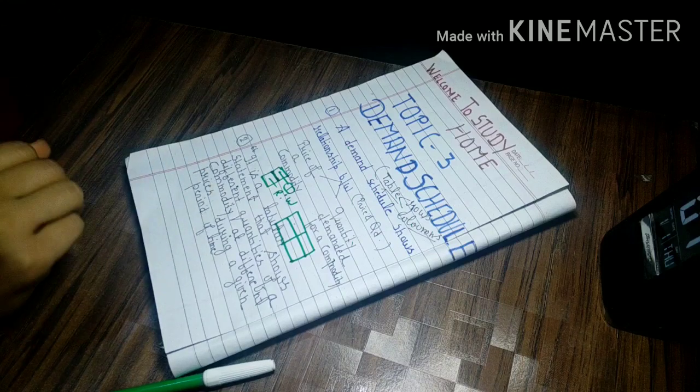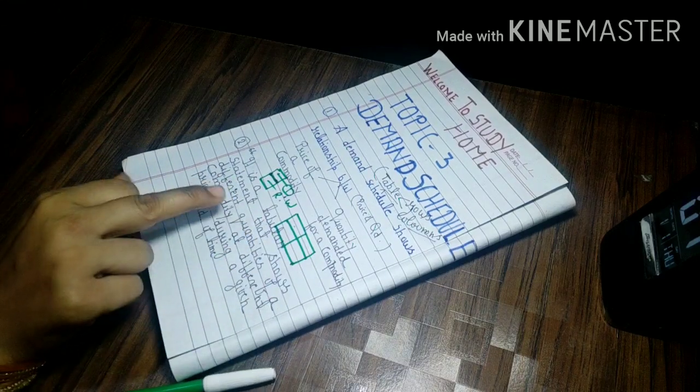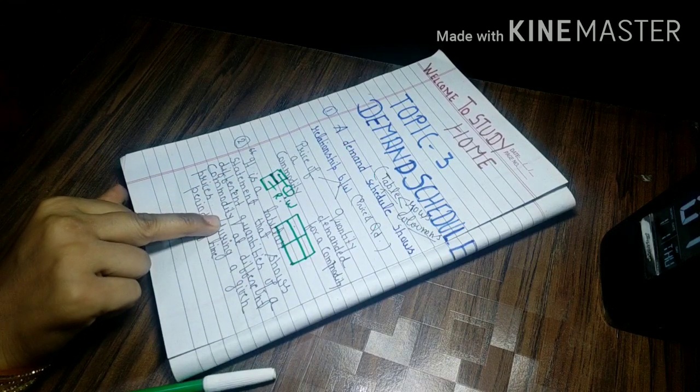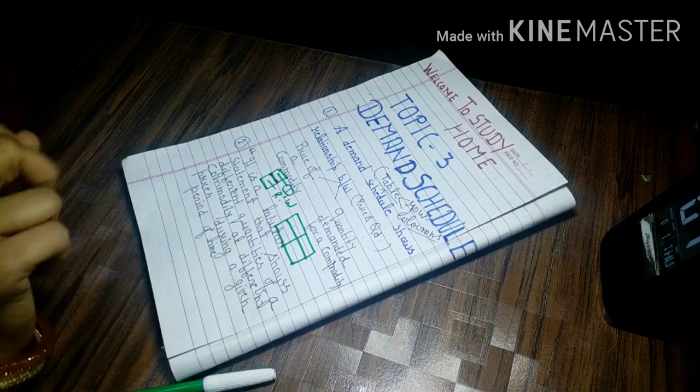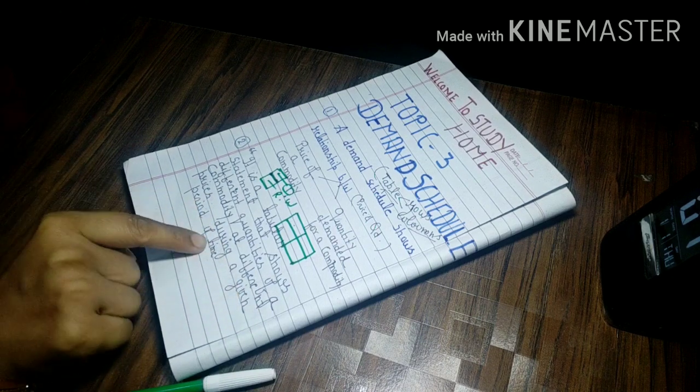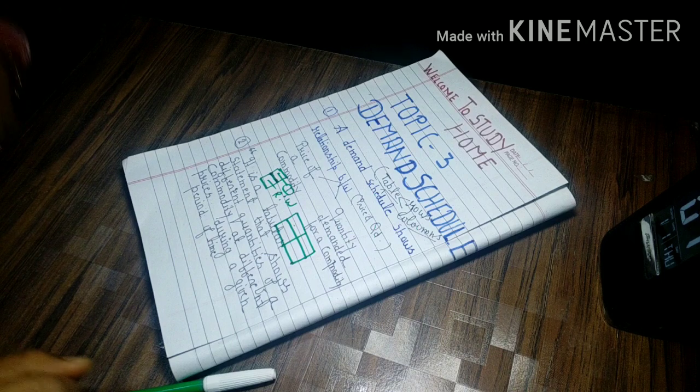So it is a tabular statement that shows different quantities of a commodity at different prices during a given period of time.